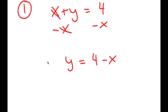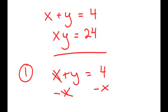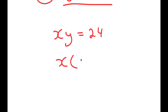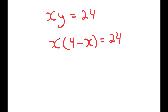I'm going to label this equation 3. Now that we have the value of y, I'm going to go back to our second equation, x times y equals 24. Since y is equal to 4 minus x, I get x times (4 minus x) is equal to 24. Distributing the x, I get 4x minus x squared is equal to 24.